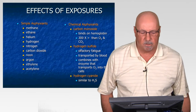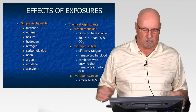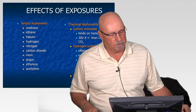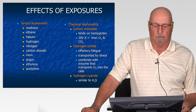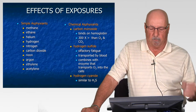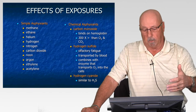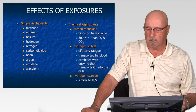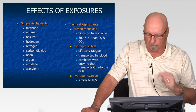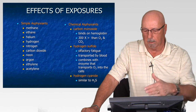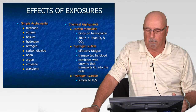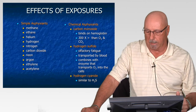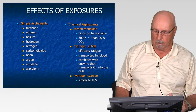Common simple asphyxiants found in the workplace include methane, ethane, helium, hydrogen, nitrogen, and carbon dioxide — many are inert gases that can displace oxygen and cause oxygen starvation. Examples of chemical asphyxiants include carbon monoxide, hydrogen sulfide, and hydrogen cyanide.